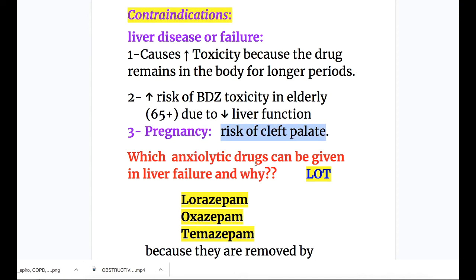Which anxiolytic drugs can be given in liver failure? The mnemonic is LOT — L for lorazepam, O for oxazepam, and T for temazepam. These three drugs may be given in liver failure because they are removed by conjugation, not by oxidative hepatic metabolism.